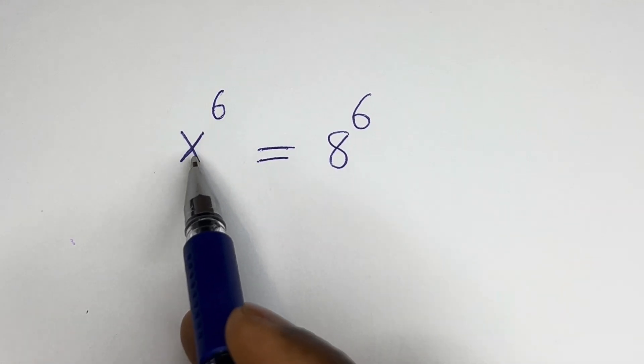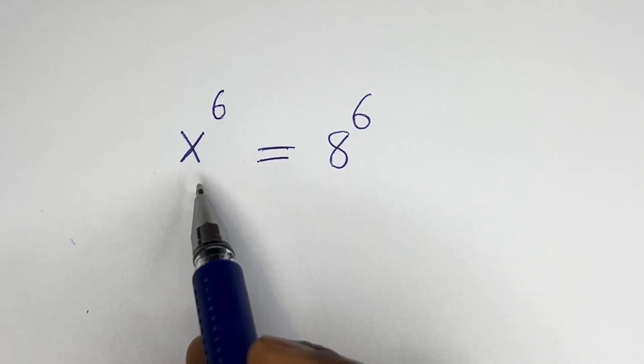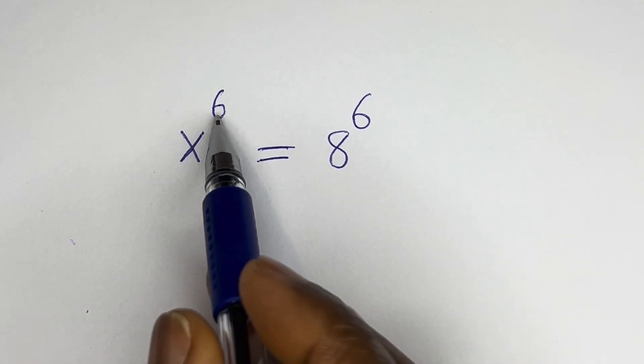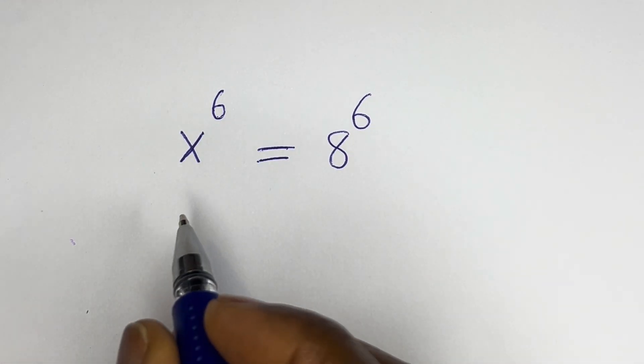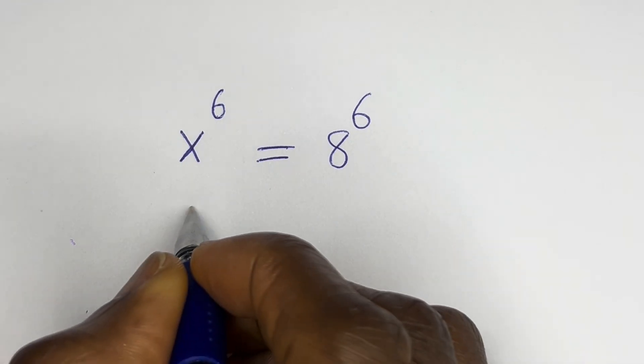Hello, how to solve for s in this equation: s to the power of 6 is equal to 8 to the power of 6.